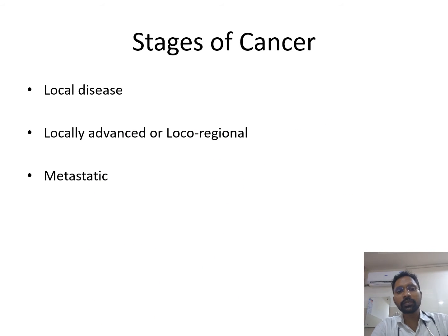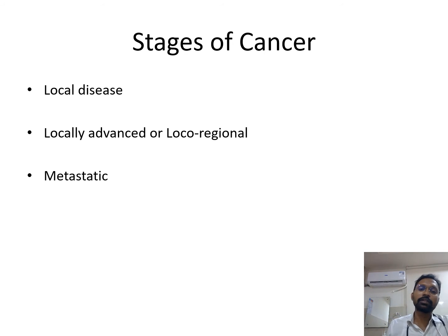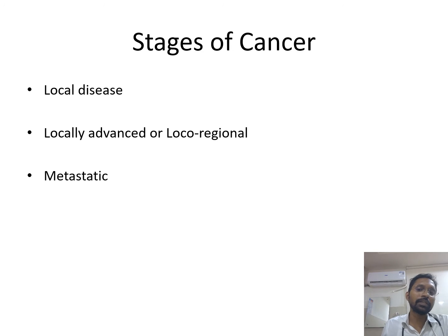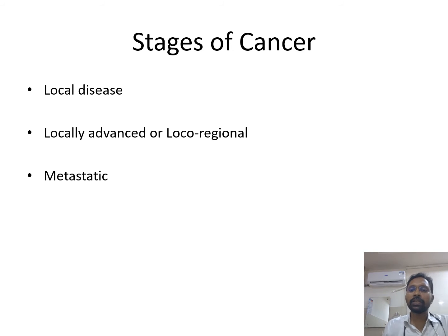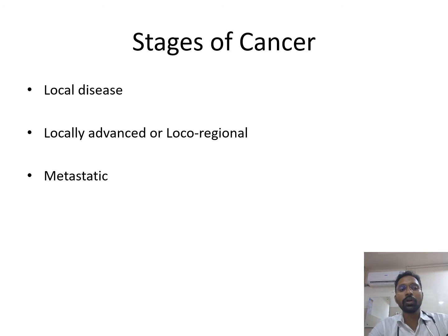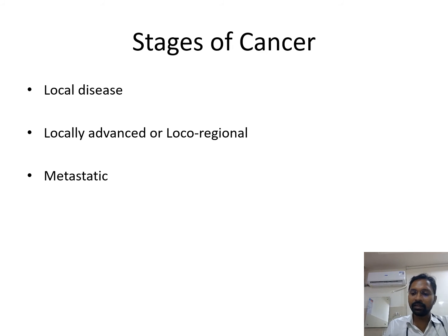In broad terms, stages of cancer can be divided into four. In stage one or local disease, the cancer is constrained to the organ from which it originated. When it grows and invades local tissues around that organ, it is called locally advanced disease. When the disease spreads to distant sites from the origin, it is called metastatic disease, or stage four disease, as we call it in many solid malignancies.